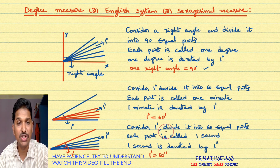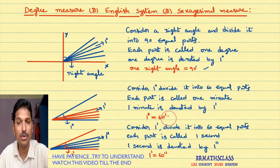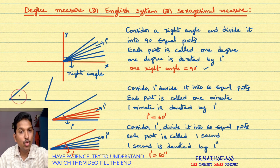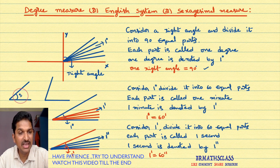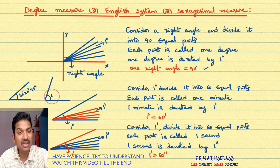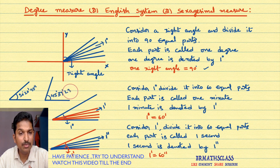So this is degree measure. The key points: one right angle equals 90 degrees, one degree equals 60 minutes, one minute equals 60 seconds. These are most important while doing problems. Till now we know angle means 30 degrees or 45 degrees, but at a micro level an angle can be expressed like this: 30 degrees, 20 minutes, 45 seconds. For example, an angle could be approximately 45 degrees, 29 minutes, 39 seconds.